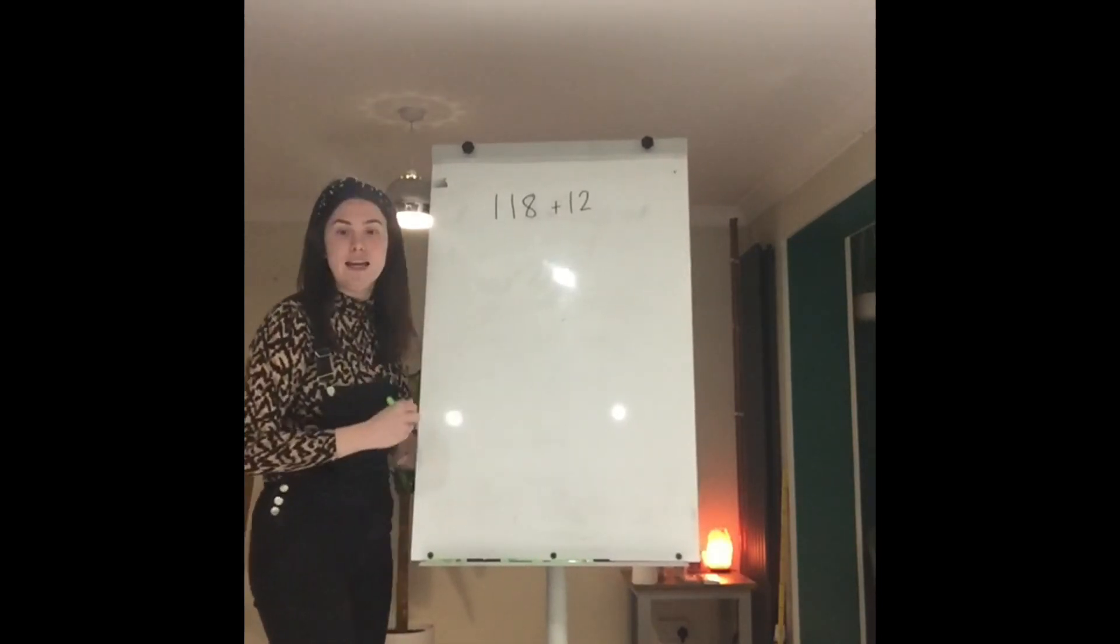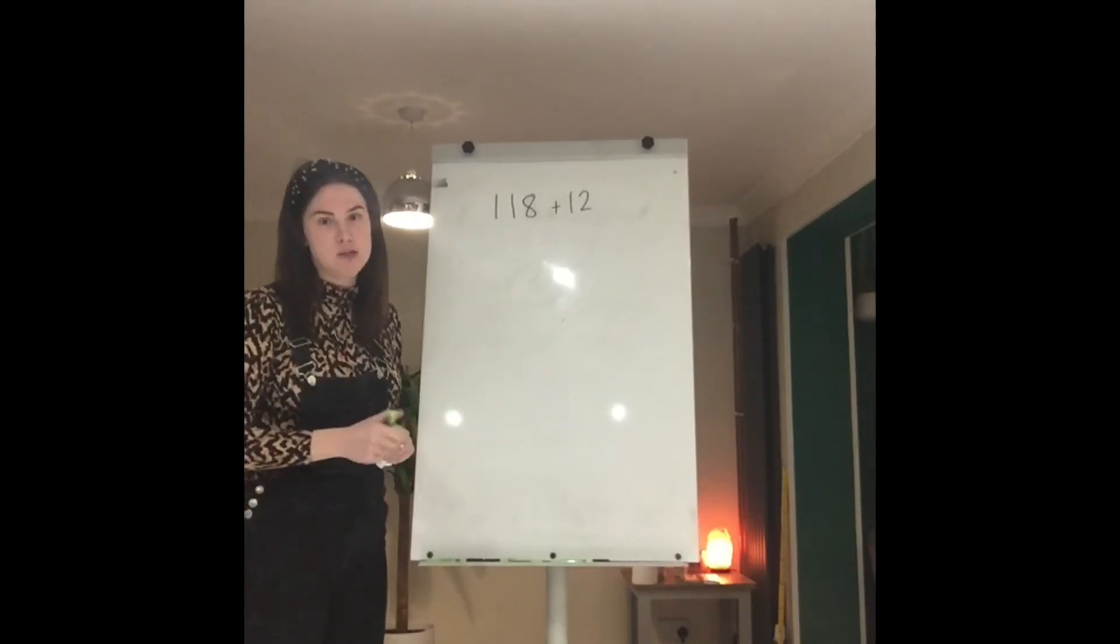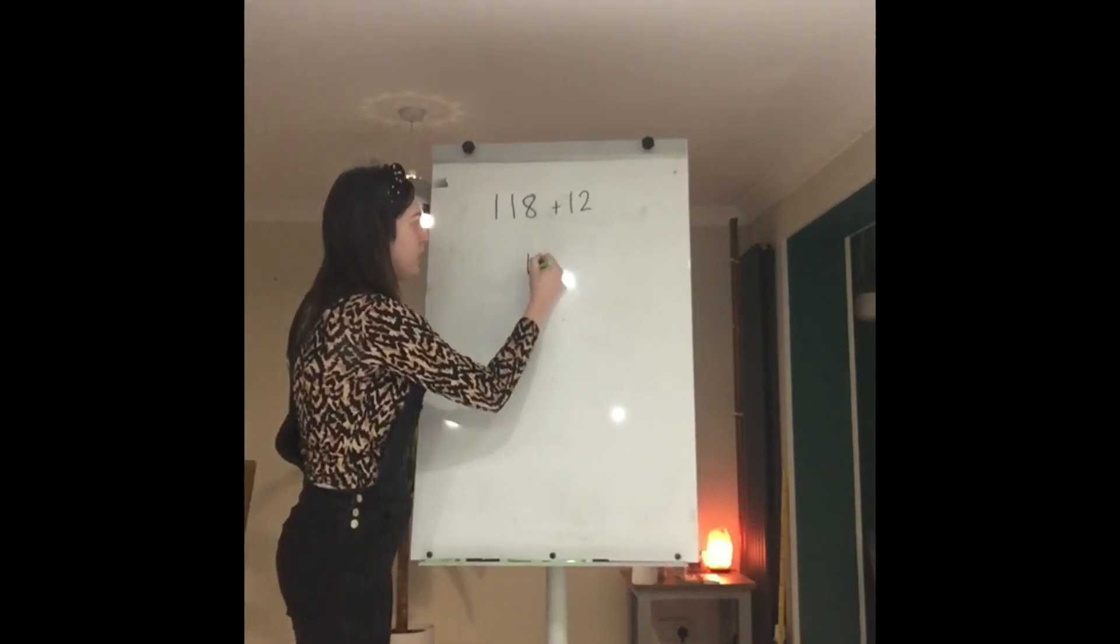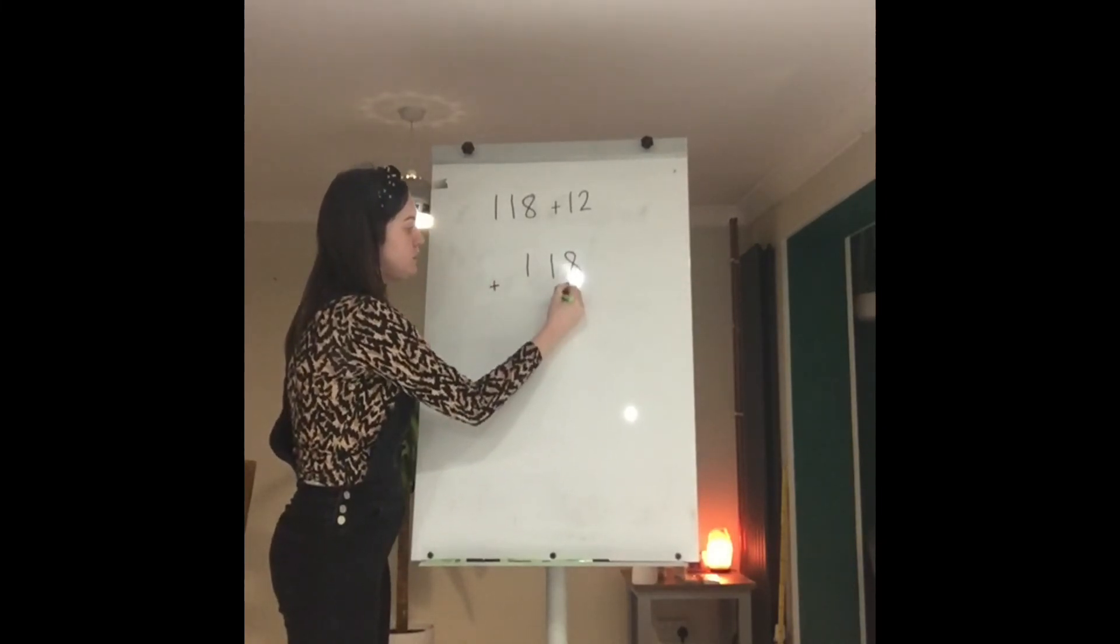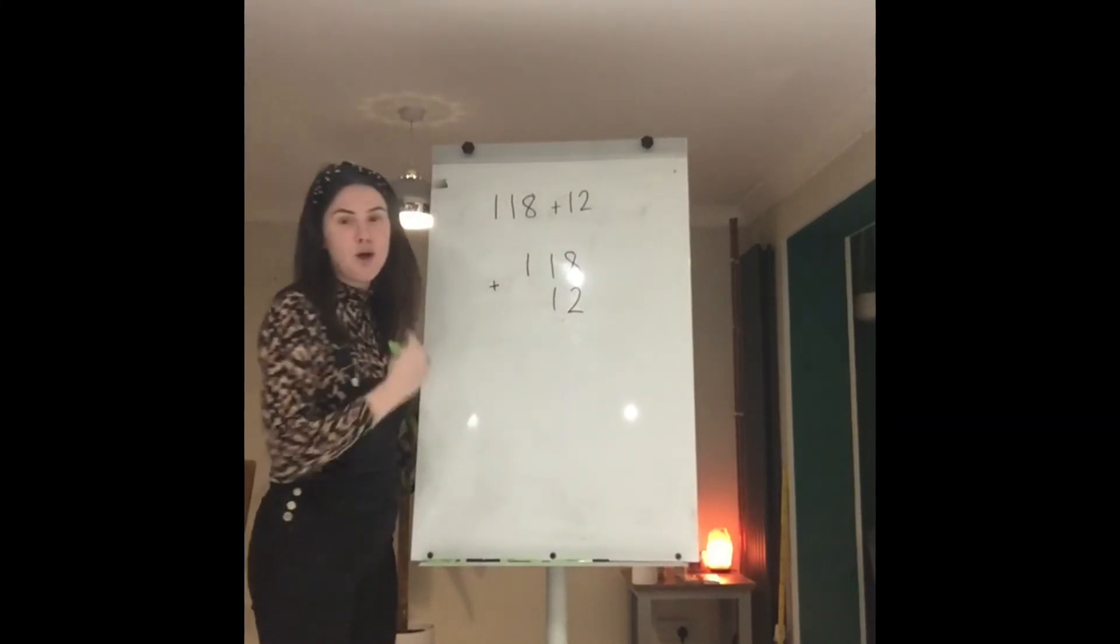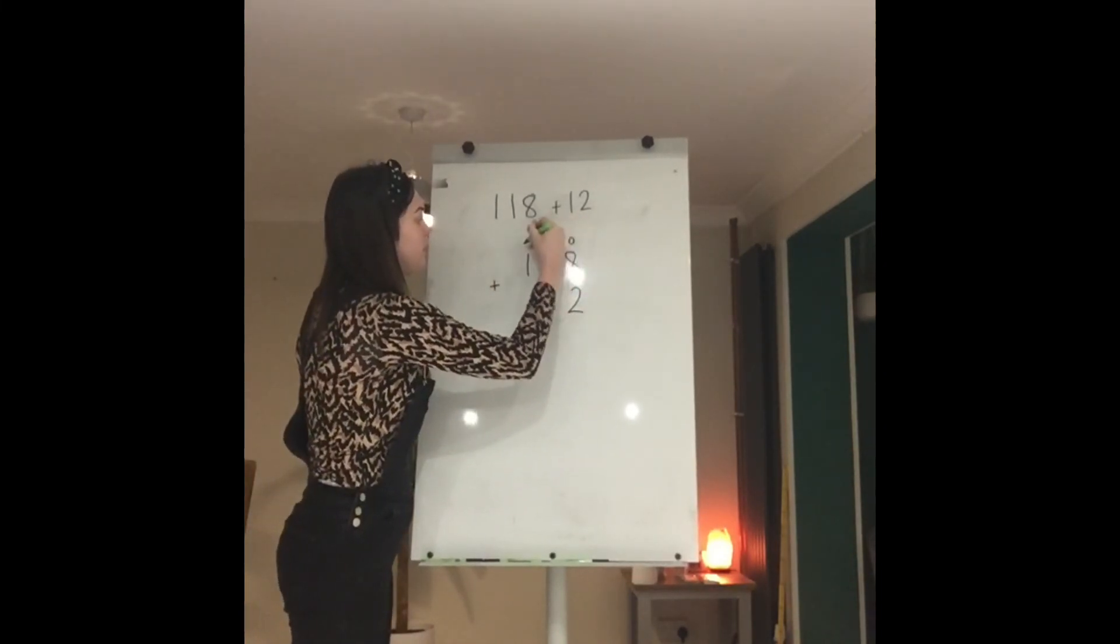We're going to set it up exactly the same way we've been doing all week, so we're professionals at it by now. 118 plus 12. Now you know me, I always put my ones, tens and now hundreds on top of my columns so I don't get lost.